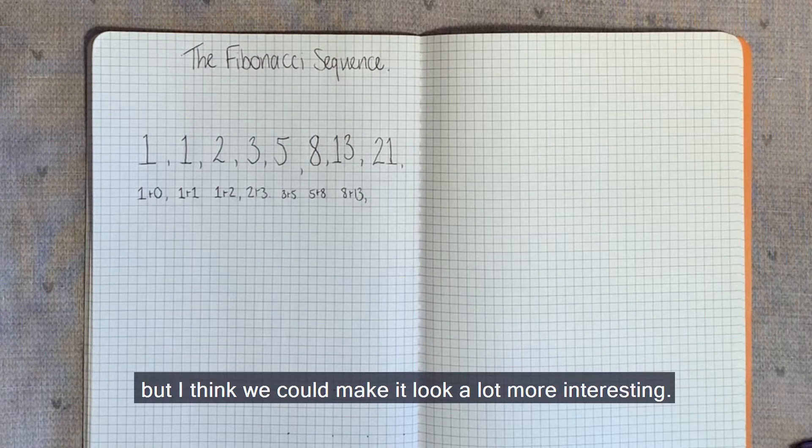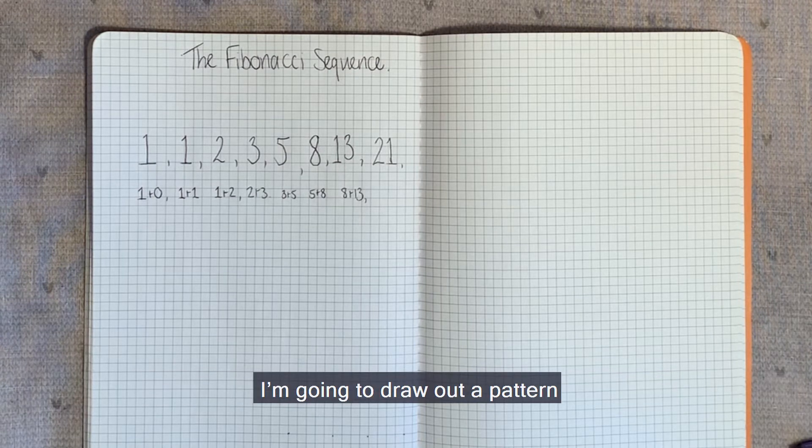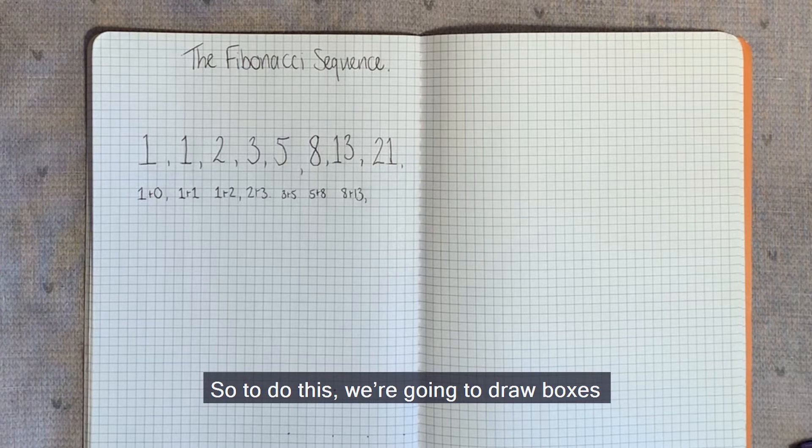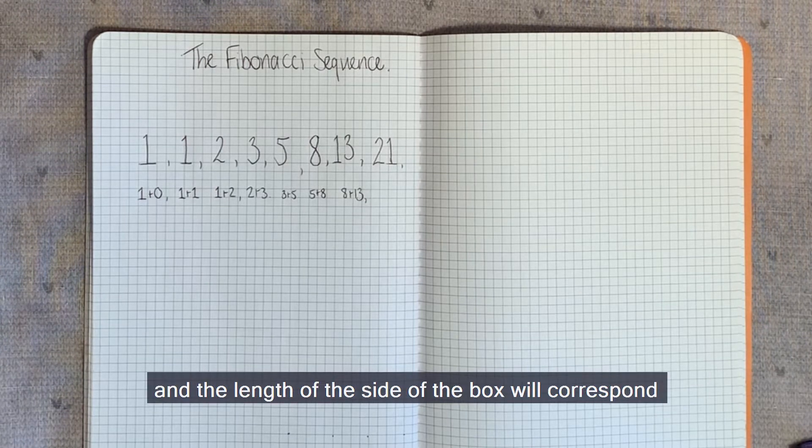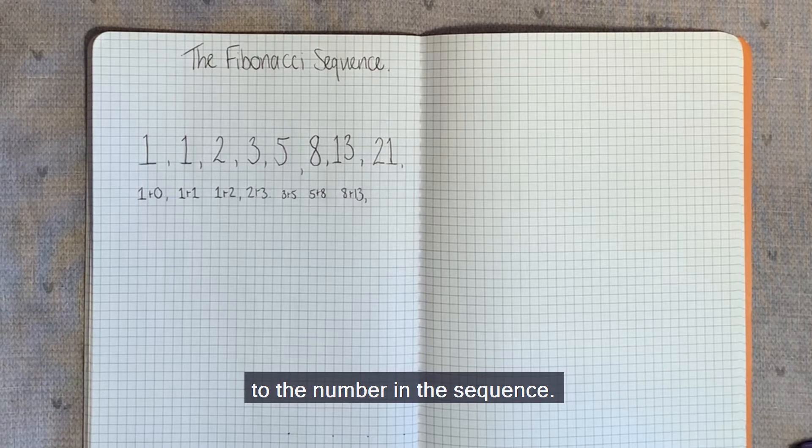This pattern's okay so far, but I think we could make it look a lot more interesting. I'm going to draw out the pattern to create a really interesting shape. So to do this, we're going to draw boxes, and the length of the side of the box will correspond to the number in the sequence. We'll start at one.